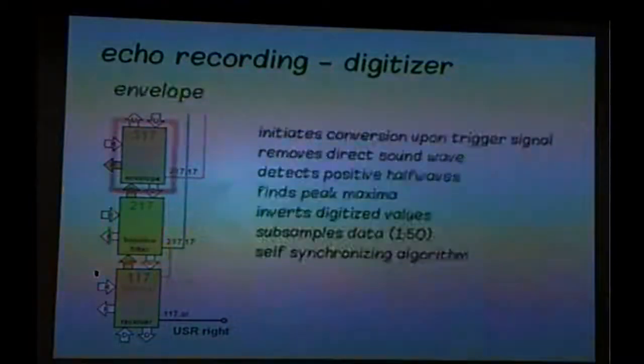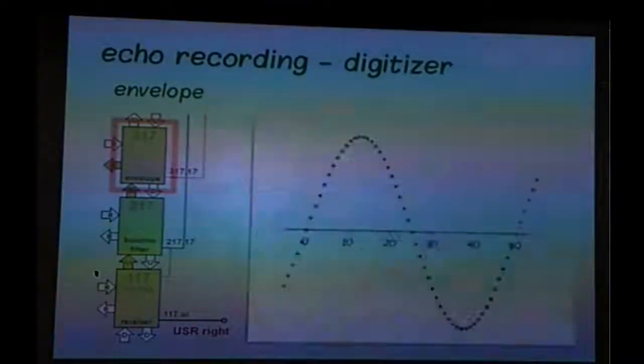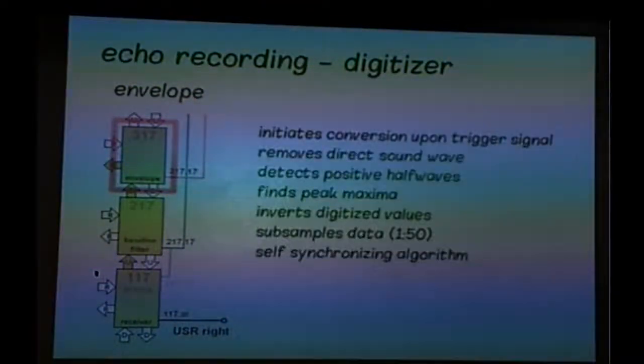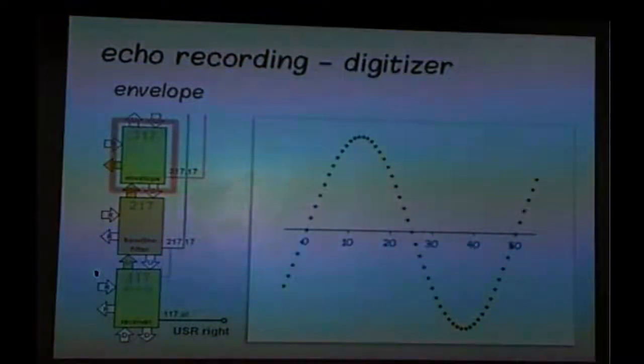Then there's the envelope node. And this node does a lot of things. It initiates a conversion upon this trigger signal that goes to the GPIO pin. It removes direct sound wave. When you send the ping, the receivers, they can hear it even before first echo comes. So it removes this wave. It detects positive half-waves, finds the maxima, inverts those values. There is some subsampling that takes place. And the algorithm is self-synchronizing. And I will explain how it works on this picture.